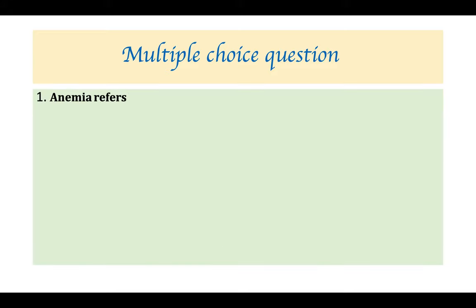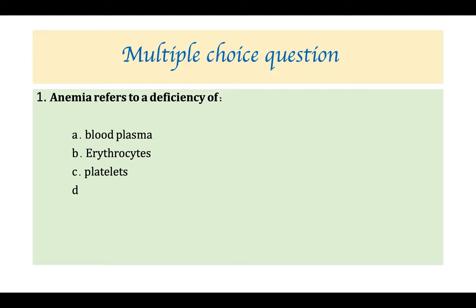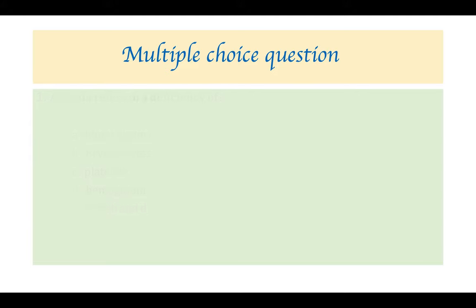MCQ: What is anemia? The answer is both erythrocytes and hemoglobin — a reduction in RBCs and hemoglobin.